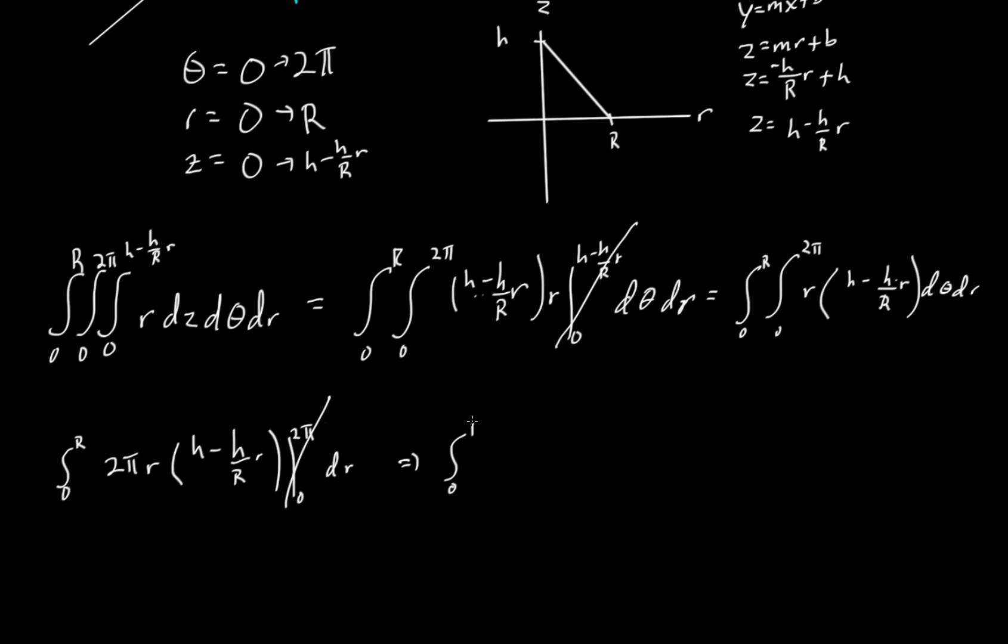So therefore we're going to have integral from 0 to capital R of 2 pi times r times h minus h over capital R times r, dr. Now note, the next variable we're going to integrate is with respect to r. So we do have r's in this expression, so we're going to have to actually evaluate it. Additionally, we have this r broken up. We can actually consolidate the r's into terms, therefore we don't have to use the product rule with integration. It makes it a little bit easier simply to do this in this expression. So therefore, this is also equal to integral from 0 to capital R of 2 pi, and then we'll distribute the r through: hr minus hr squared over capital R, dr.